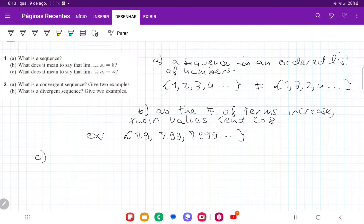And finally for C, it's saying, what does it mean to say that the limit of a_n, as n approaches infinity, is infinity? Well, it just means that the more terms that we add, these terms get very large. They get closer and closer to infinity. So we say that as the number of terms increase, their values grow without bound.